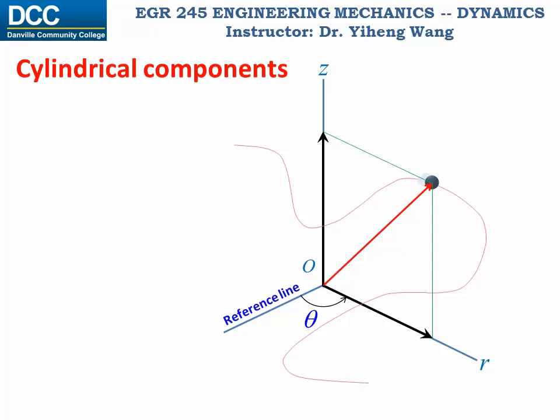Now, curvilinear motion represented in the three-dimensional cylindrical coordinate system. We keep the same z axis from the rectangular coordinate system, and replace the 2D x, y coordinate system with a 2D polar coordinate system. The position of this particle can be represented by coordinates r, theta, and z. There are three unit vectors: u_r, the direction of the radial component; u_theta, the direction of the transverse component, which is always perpendicular to u_r; and u_z, which is the same as the k unit vector from the rectangular coordinate system, always perpendicular to the plane made by u_r and u_theta.